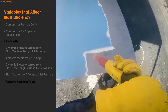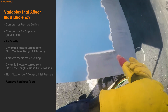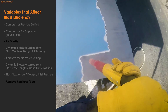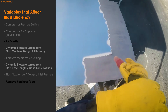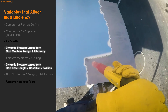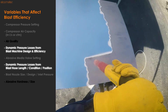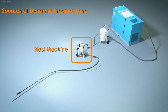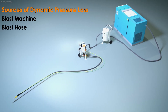As we mentioned in part one, typically the higher the pressure at the nozzle, the more efficient your blast. So to ensure you have enough pressure at the nozzle, you'll want to avoid dynamic pressure losses. Dynamic pressure losses are caused by how the air moves through the blast system, and as mentioned, these pressure losses occur mainly in the abrasive blast machine and across the length of the blast hose.